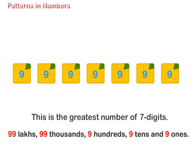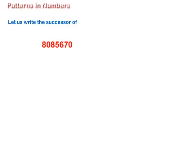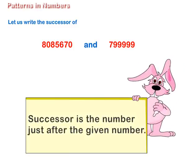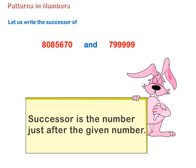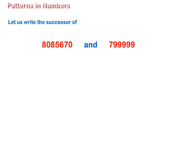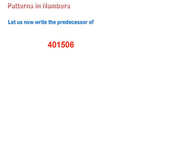Let us write the successor of 80,85,670 and 7,99,999. Successor is the number just after the given number. So, the successor of 80,85,670 is 80,85,671. The successor of 7,99,999 is 8 lakhs, i.e., 8,00,000.